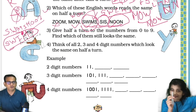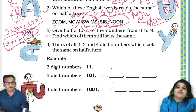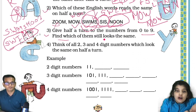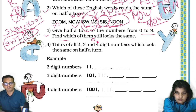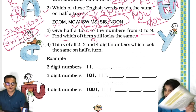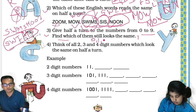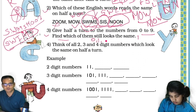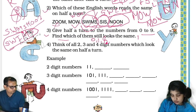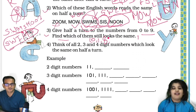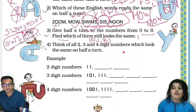Now point number three: give half a turn to the numbers from zero to nine and find which of them still looks the same. Zero — zero will look the same. One — one will also look the same. Two — no. Three — no. Four — no. Five — no. Six — no. Seven — no. Eight — eight will look the same. Nine — no. So zero, one, and eight are the digits that look the same after half a turn.